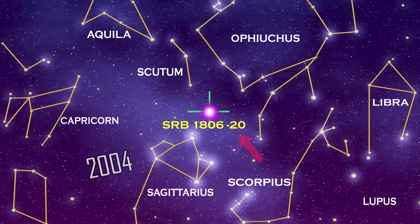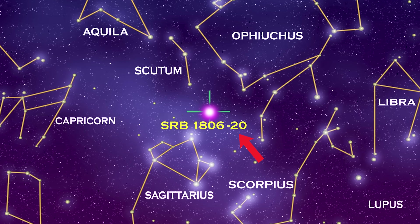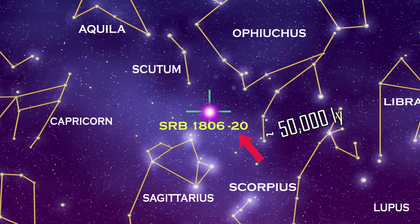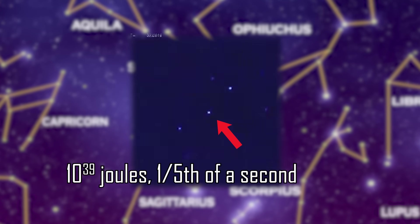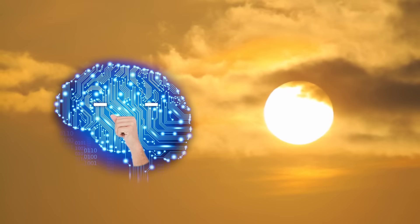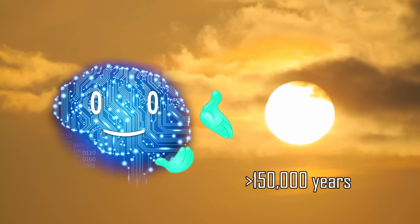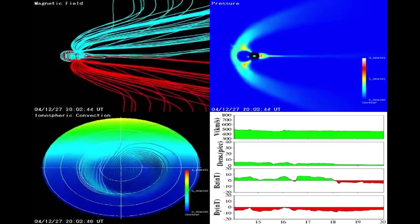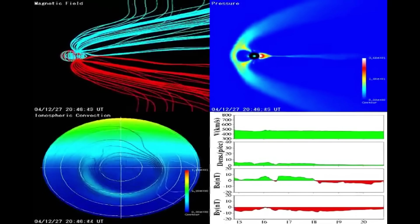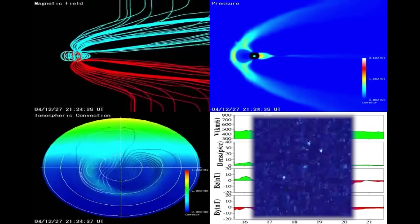Back in 2004 we observed the most powerful such event happening at 50,000 light years away, with 10 to the power of 39 joules released in just one-fifth of a second. That's more than our sun would release in 150,000 years. Even though so far away, it still disrupted some radio communication and outshone the moon for an instant.